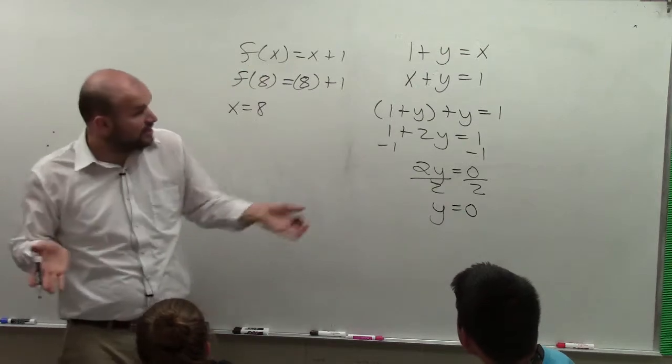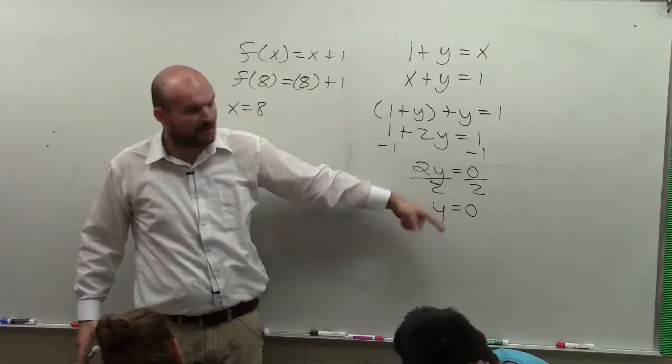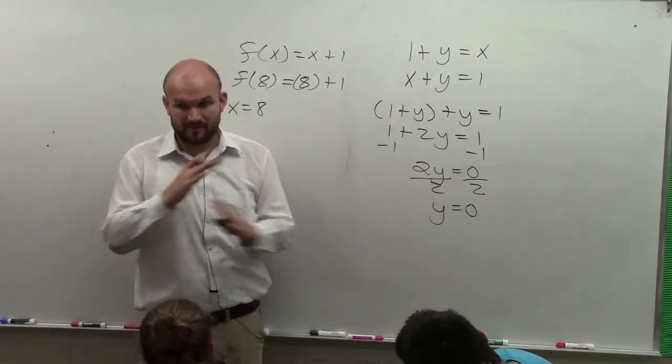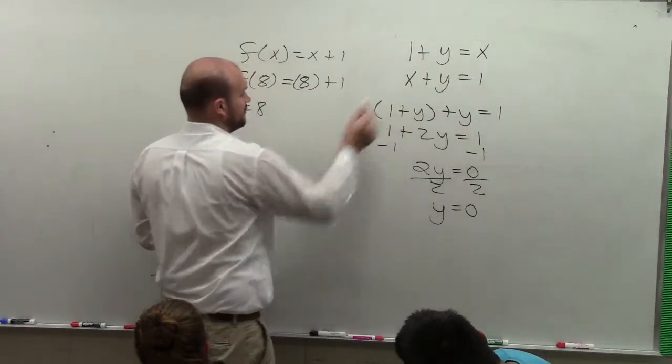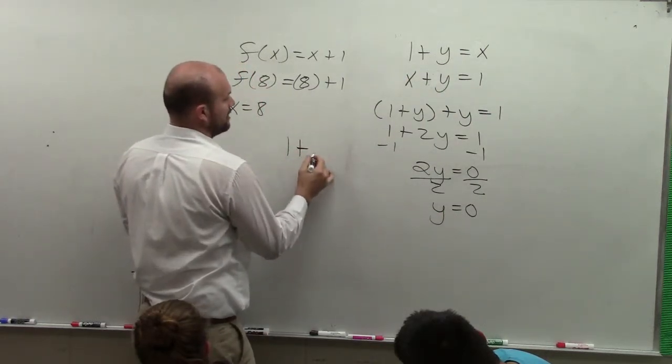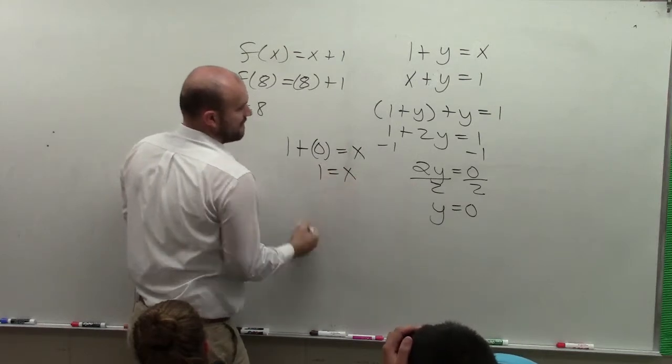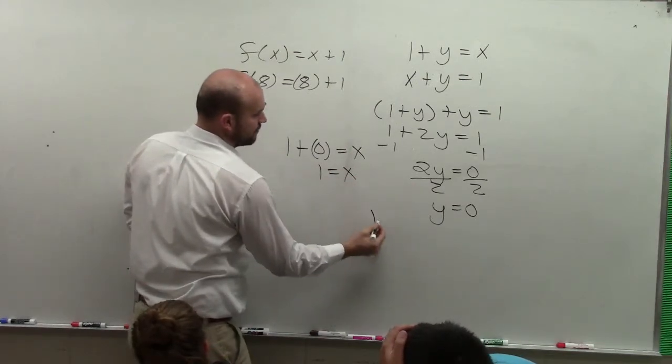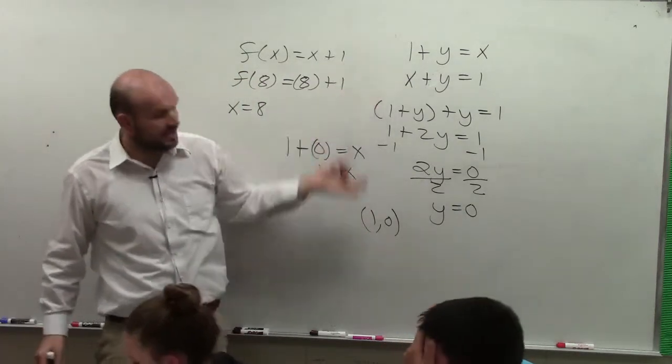So therefore, if you're thinking about the graph, the point where these two intersect is at when y equals 0. Now let's figure out the x-coordinate, because remember, it's a coordinate point where they intersect. So I can plug 0 in for y. So I have 1 plus 0 equals x, 1 equals x. That means my coordinate point is 1 comma 0. That's where these two lines, if I was to graph them, would intersect.